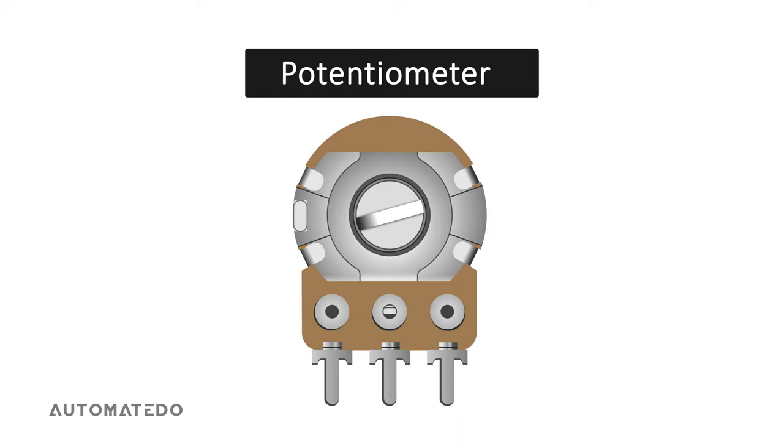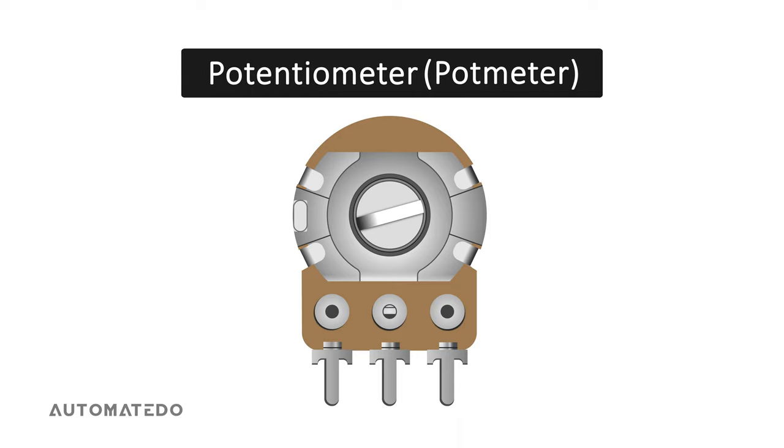A potentiometer, often known as a pot or a potmeter, is a three terminal mechanically driven rotating analog device that can be found and utilized in a wide range of electronic projects.